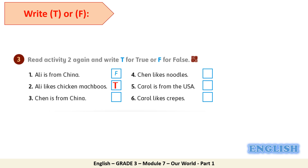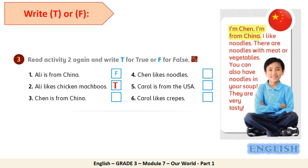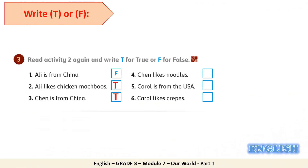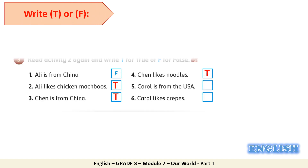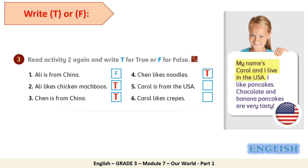Number three — 'Chen is from China.' Let's go back to the text. It says 'I'm Chen, I'm from China.' Wonderful — the sentence is true. Number four — 'Chen likes noodles.' The text says 'I like noodles.' This sentence is true. Number five — 'Carol is from the USA.' Carol says 'my name's Carol and I live in the USA.' Excellent — this sentence is true.